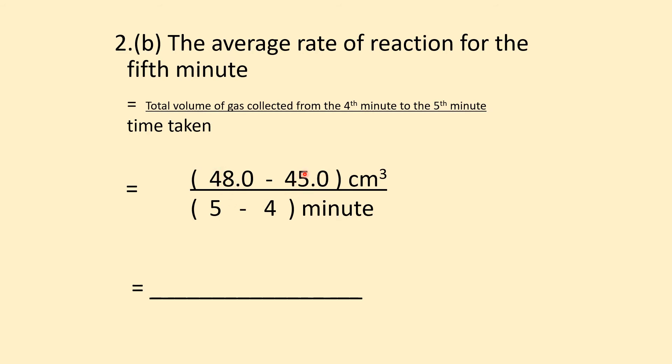So it's (48-45)/(5-4) = 3/1 = 3 cm³ per minute. This is the average rate for the fifth minute, which is between the fourth and fifth minutes.